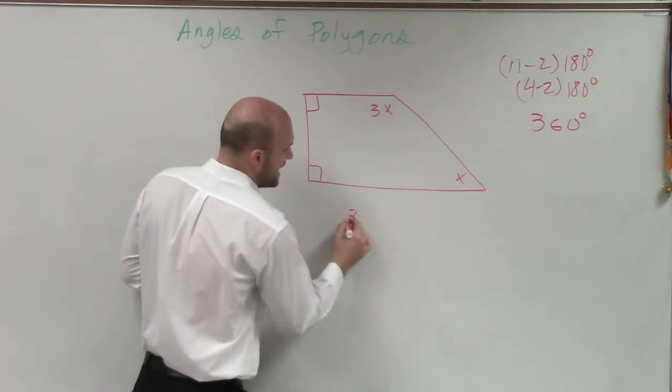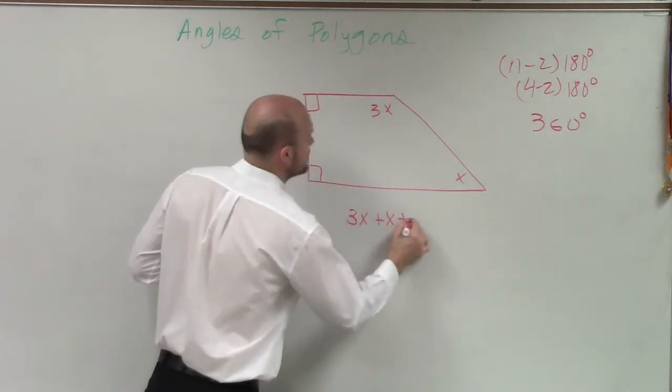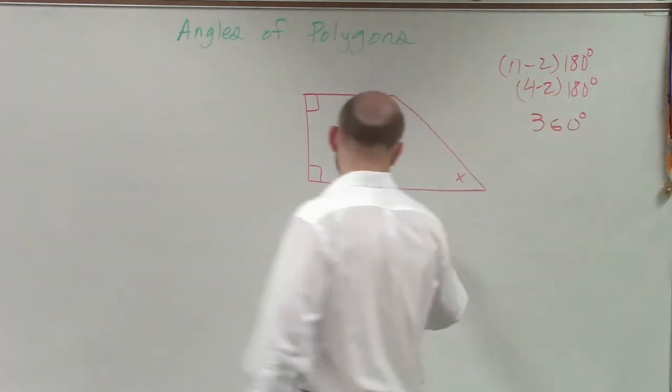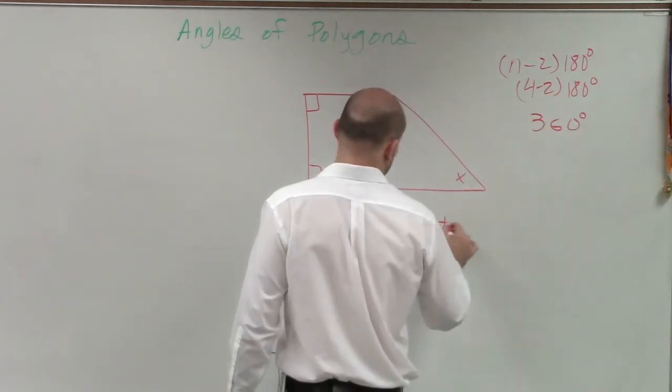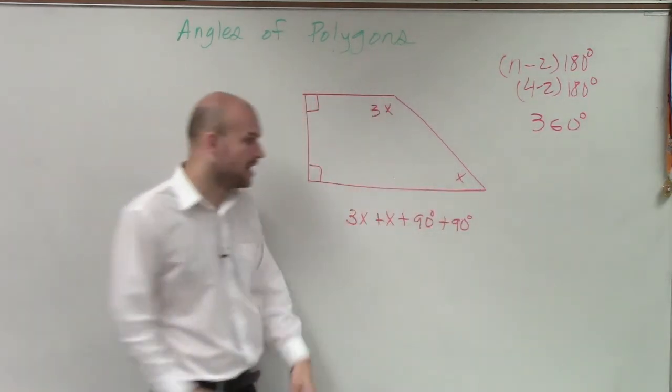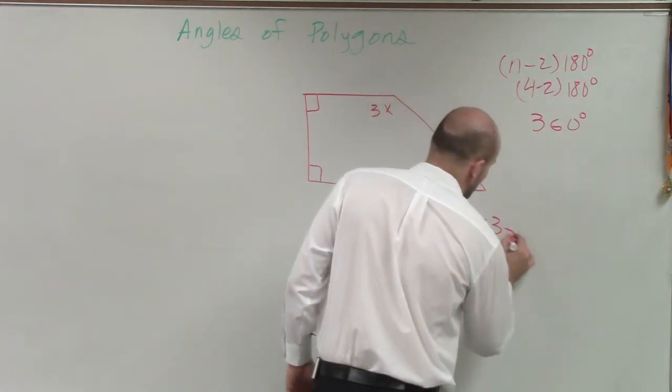So I have 3x plus x plus what are these little boxes representing? What measurement? 90 degrees. So you can say plus 90 plus 90 degrees. And remember, all of my angles add up to give you 360.